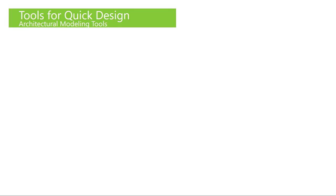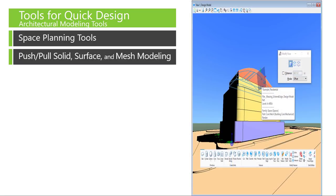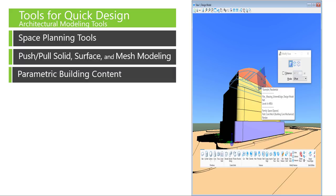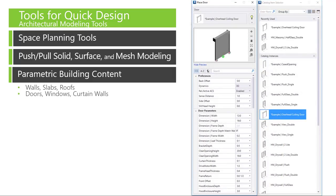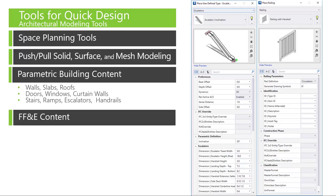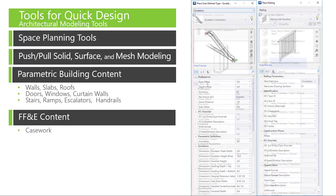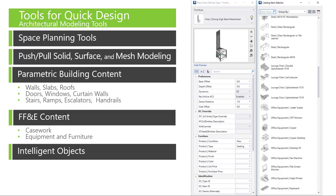Now let's look at some of the architectural tools. Ecosim Building Designer has space planning tools that allow you to import spaces from room and area data in an Excel spreadsheet and track those spaces throughout the life of the project. It includes all the same 3D modeling tools found in MicroStation, like push-pull solid and surface modeling, making it possible to create any form at a conceptual design stage. There are also libraries of parametric building content like walls, slabs and roofs, doors, windows and curtain walls, stairs and handrails, plus FF&E content like casework, equipment, and furniture — all intelligent objects that can be tagged and scheduled.